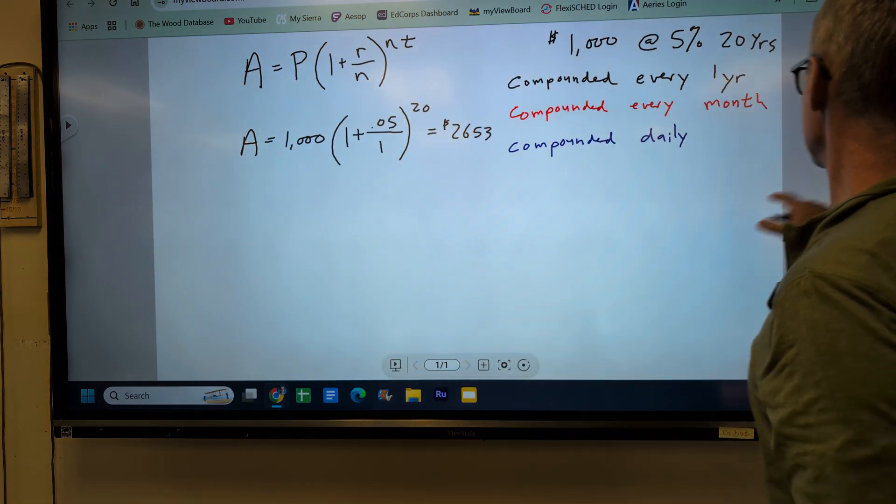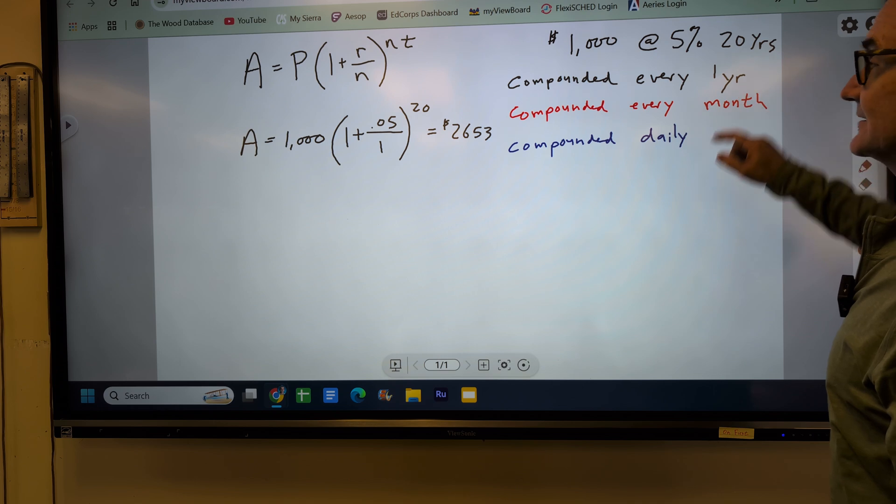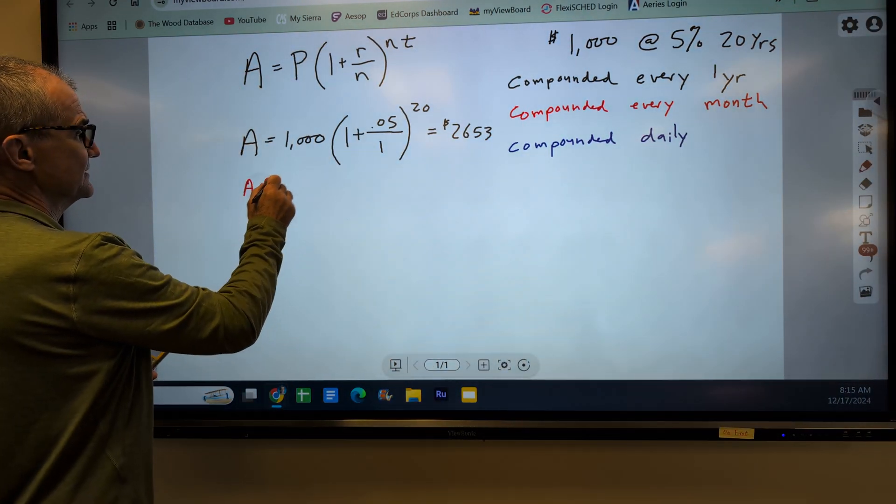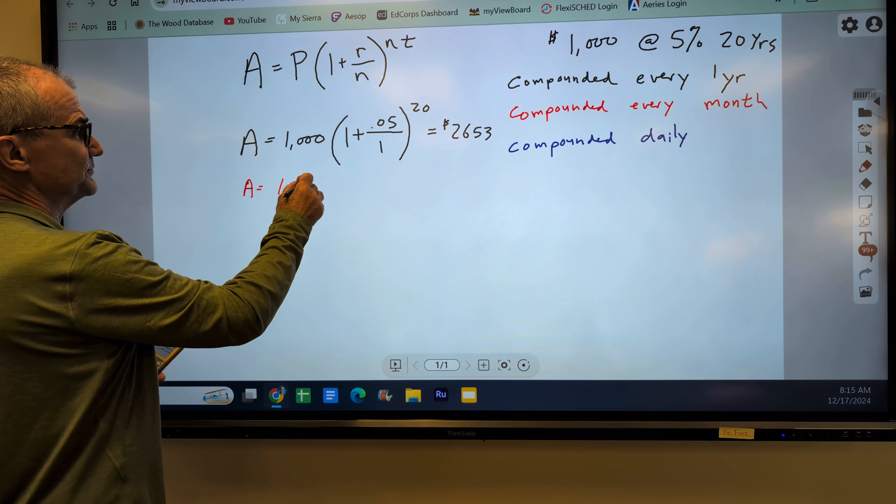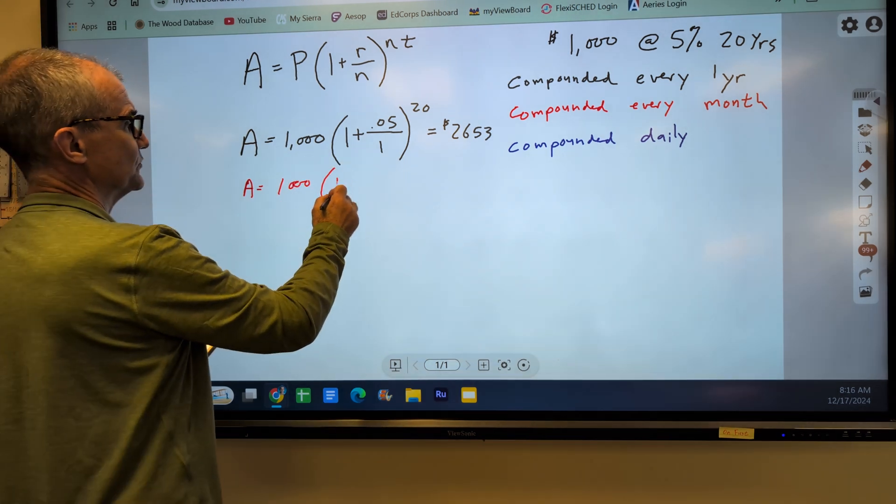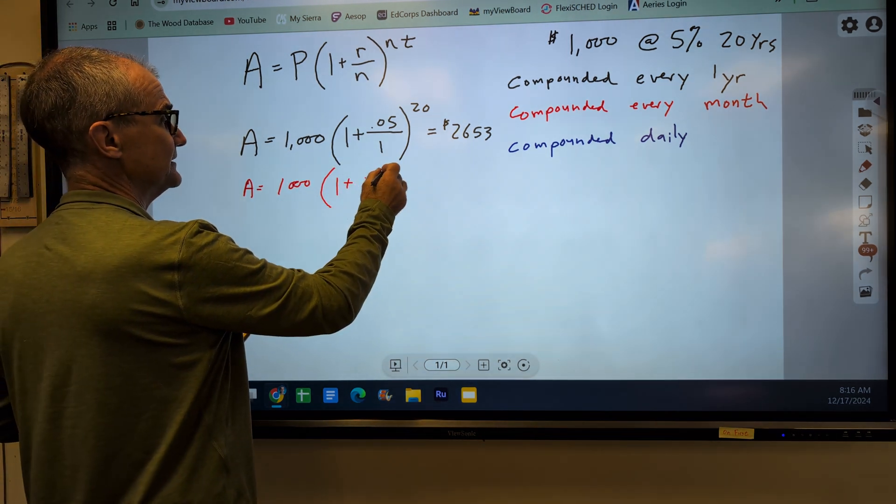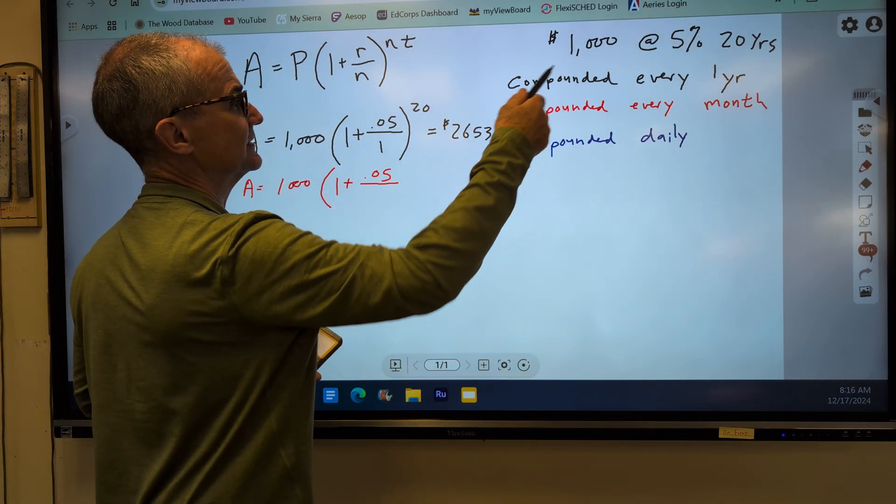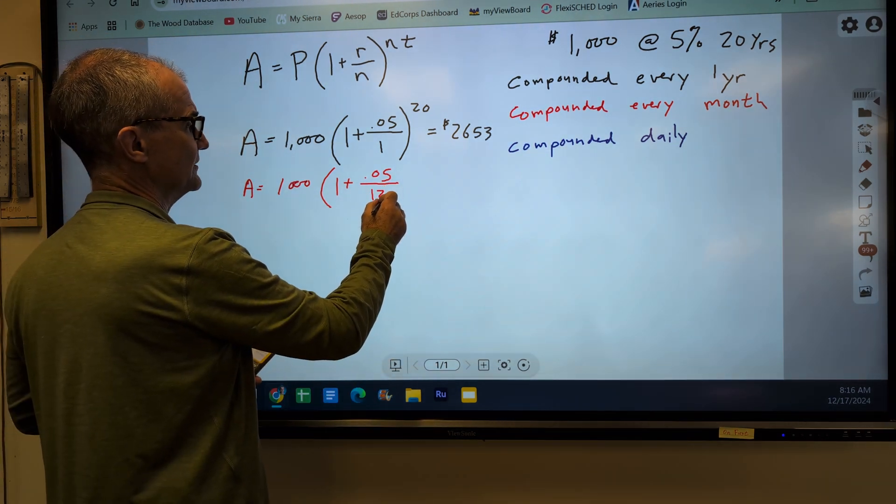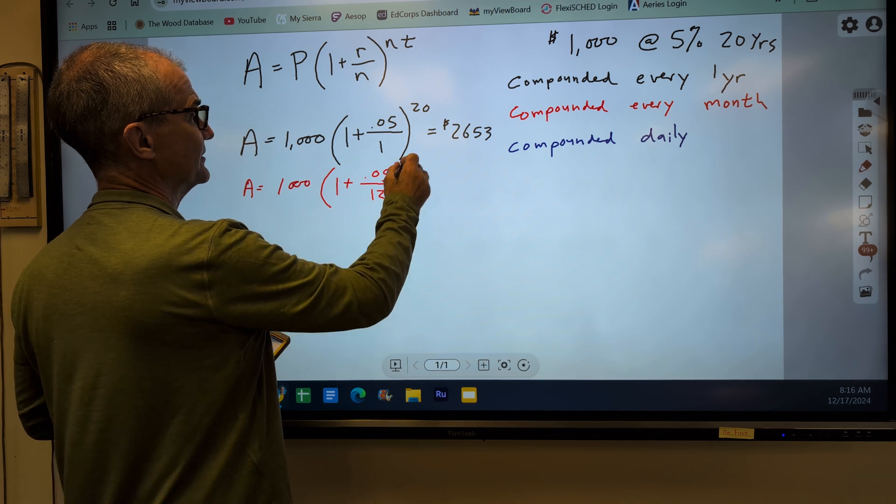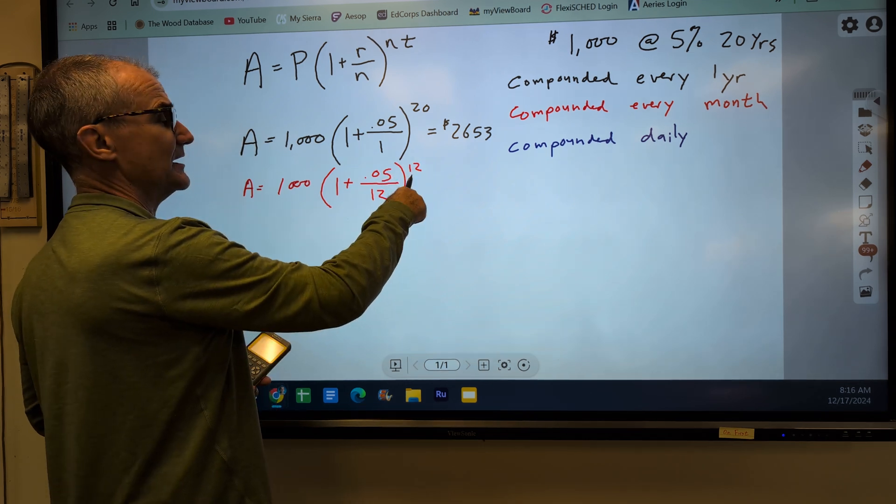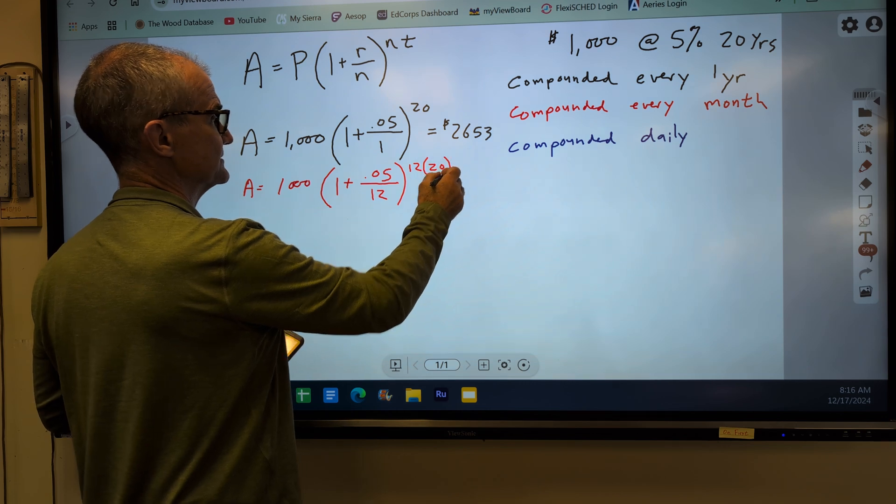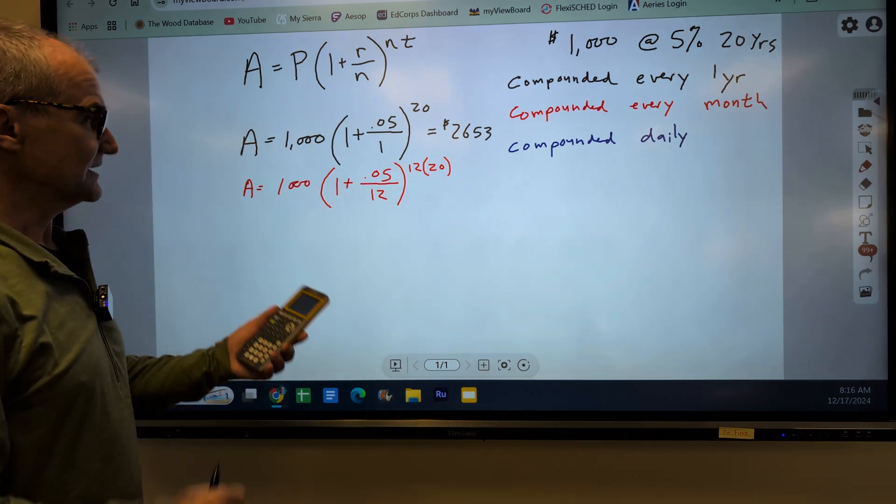Now let's say we compound it every month. I'll do that in red here. Everything's kind of the same. Now let's say my amount coming out is still dependent on my original principal times 1 plus my interest rate. In the bottom here, I am compounding it 12 times in a year. So 12 to the power of the number of times I'm compounding it in a year times the number of years.